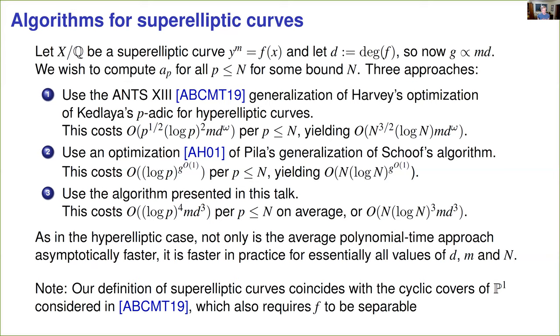And I'll just note, if you're familiar with the ANTS-13 paper on superelliptic curves, the title of that paper actually refers to cyclic covers, but the class of cyclic covers they consider is precisely the class of superelliptic curves we're talking about here. In particular, they also assume that the polynomial f is separable.